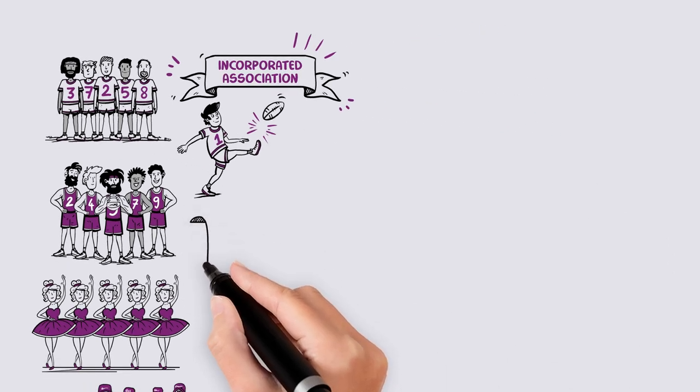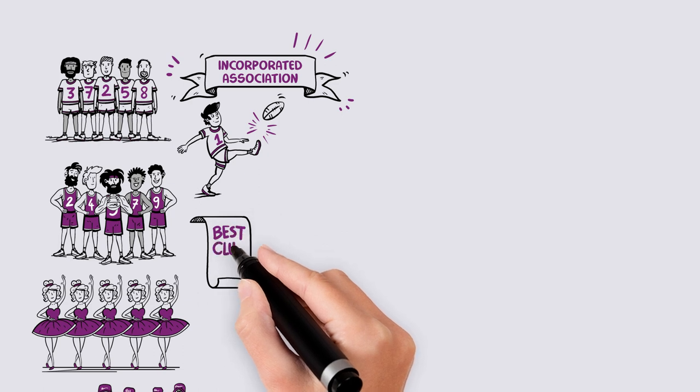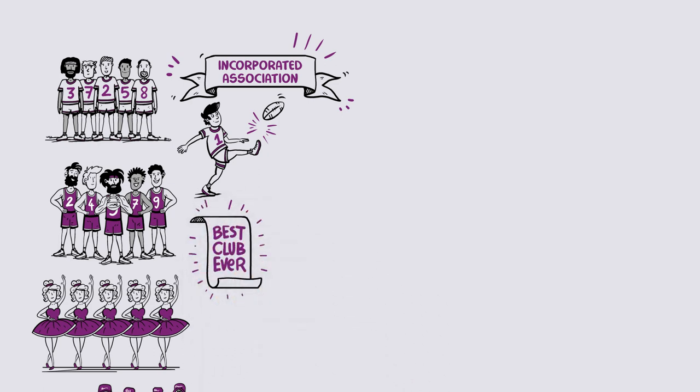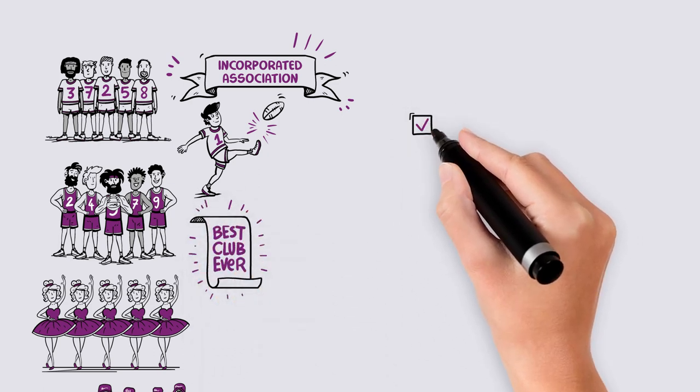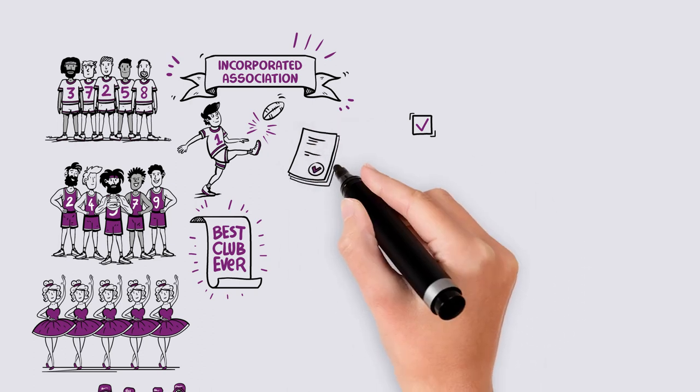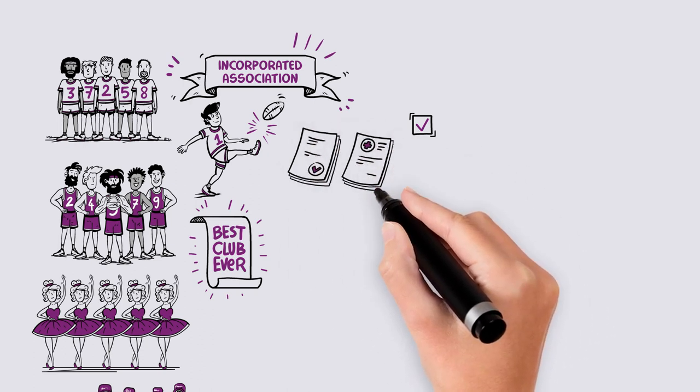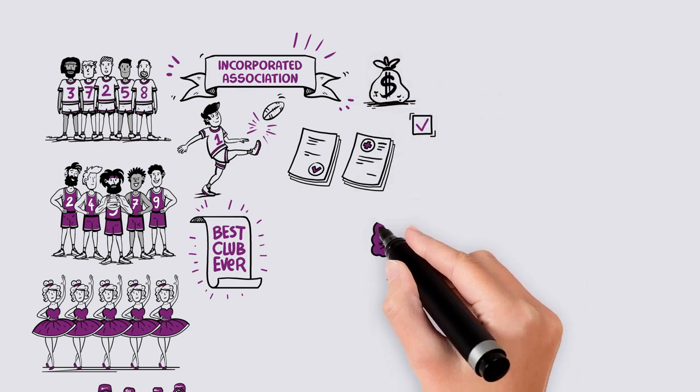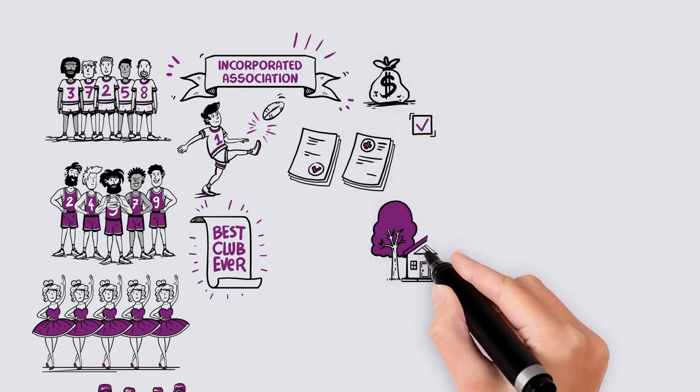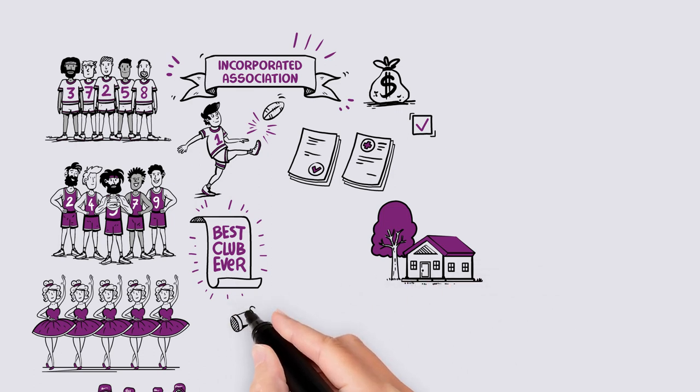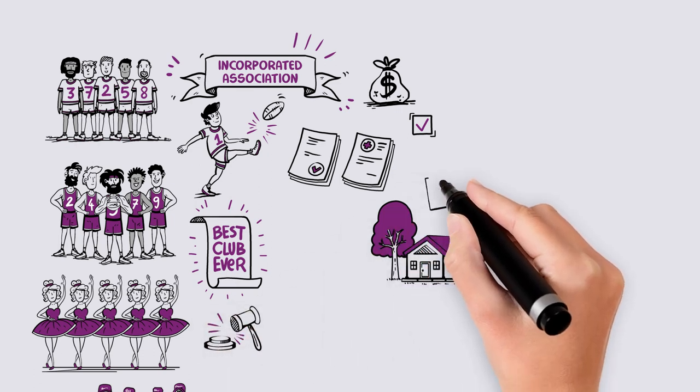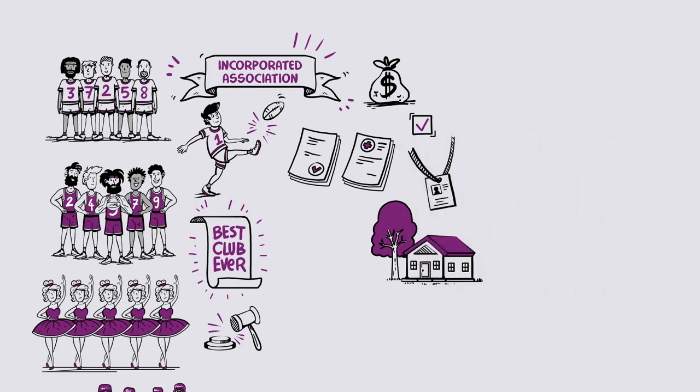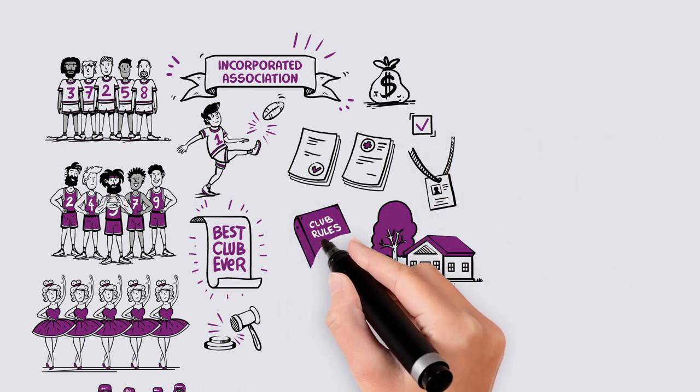An incorporated association is its own legal entity and operates in its own name. It can enter into contracts, have insurance, apply for government grants, obtain land, mortgages and loans, sue and be sued, and employ staff. It is treated the same as a person.